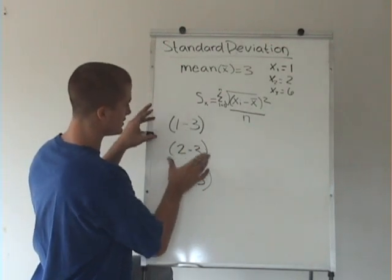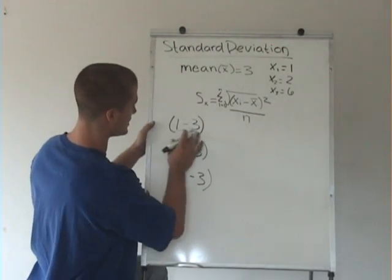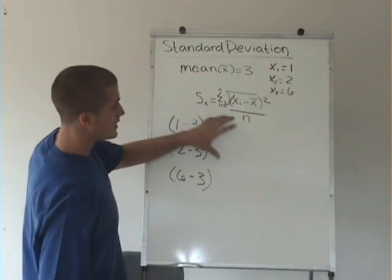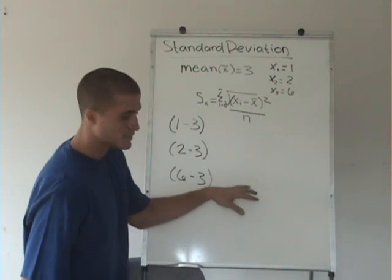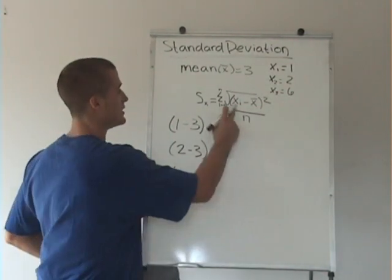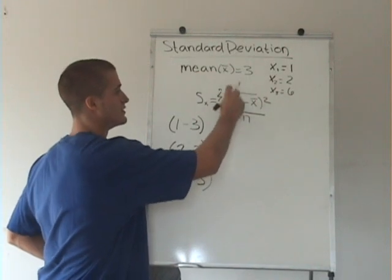Because if we just did this, and we took 1 minus 3 is negative 2, 2 minus 3 is negative 1, and 6 minus 3 is 3, and we added those numbers, we always get zero. So that's why we have to do this squared and the square root term.